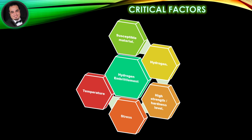Critical Factors: In reference to the figure, hydrogen embrittlement only occurs when a critical combination of five conditions is satisfied. First, the material must be susceptible. Second, hydrogen must be present at a critical concentration within the material. Third, the strength and hardness level must be high enough, and the microstructure must be susceptible to hydrogen embrittlement.